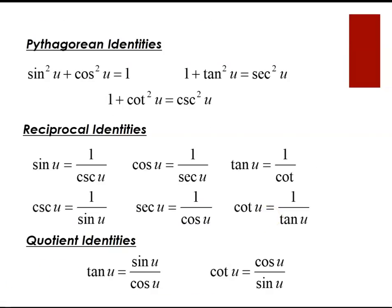The Pythagorean identities to add to your formulas are: sine squared u plus cosine squared u equals 1; one plus tangent squared u equals secant squared u; and one plus cotangent squared u equals cosecant squared u. Practice these constantly — mathematics requires not just memorization but regular practice.